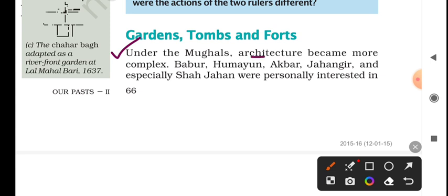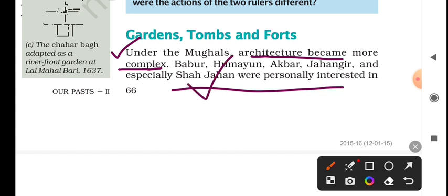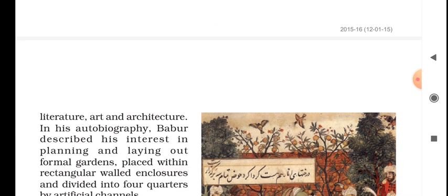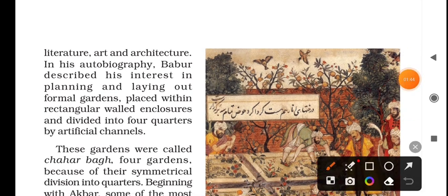Under the Mughals, architecture became very complex — the opposite of simple. They would take a simple design and make it very intricate and beautiful. Most Mughal emperors, from Babar to Humayun to Akbar, were interested in architecture, art, and literature.